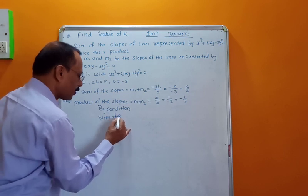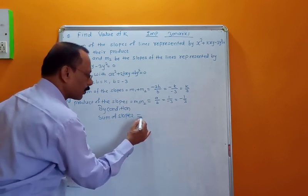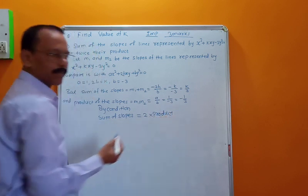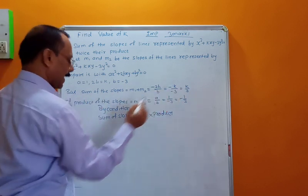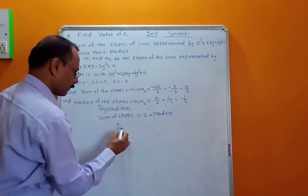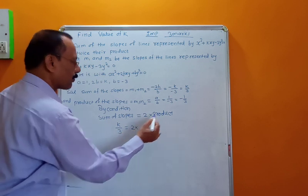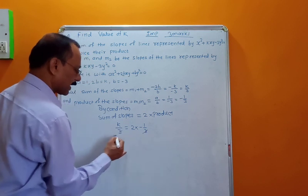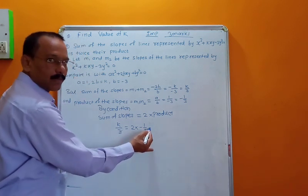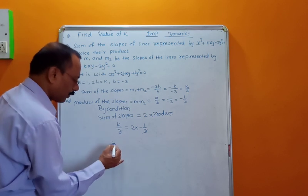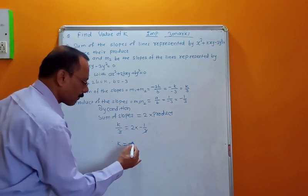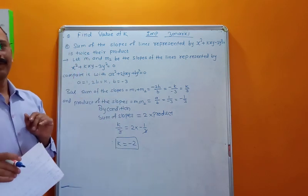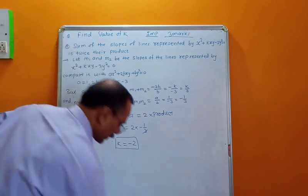By condition, sum of slopes = twice their product. Sum of slopes is k/3, and 2 times product of slopes is 2 × (−1/3). The 3s cancel when transferred to the RHS, giving k = 2 × (−1) = −2. So the value of k is −2.